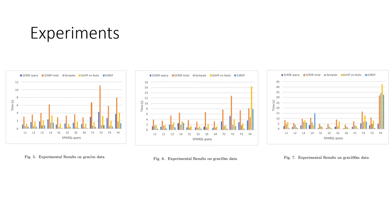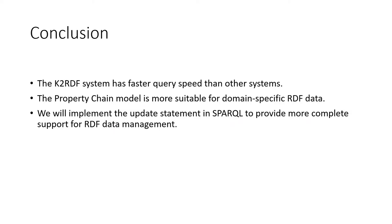As can be seen from the experimental results in the previous section, the K2 RDF system has faster query speed than other systems. But the property chain model also has drawbacks. If the number of classes in RDF data is very large, the model will create a large number of tables, which will affect the storage and query processing of the data. Therefore, the property chain model is more suitable for domain-specific RDF data.